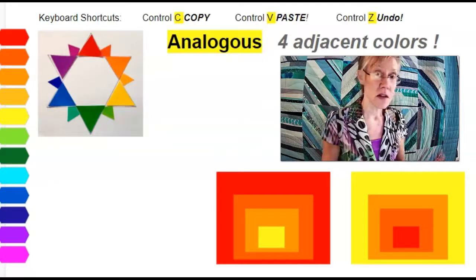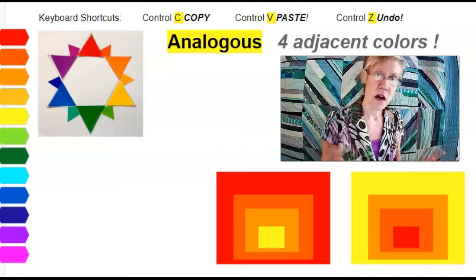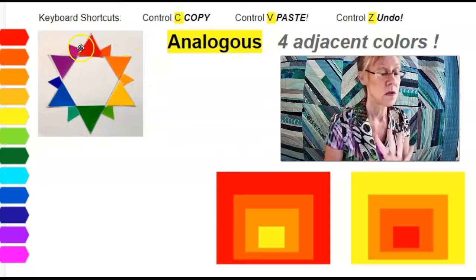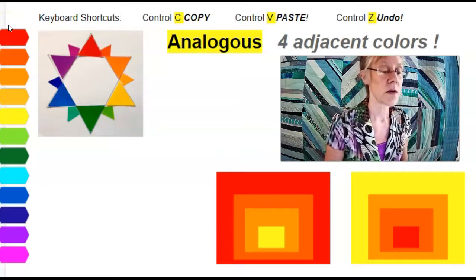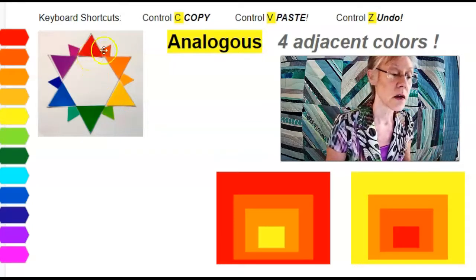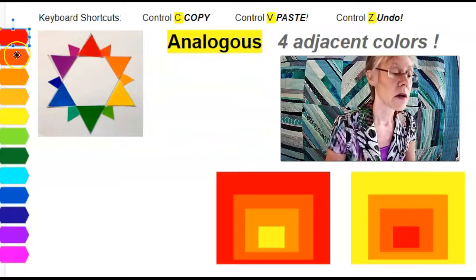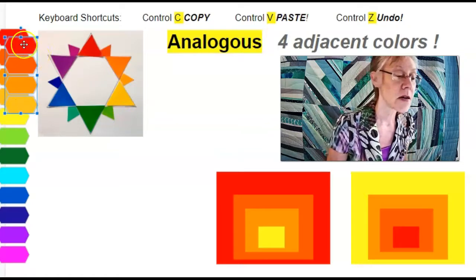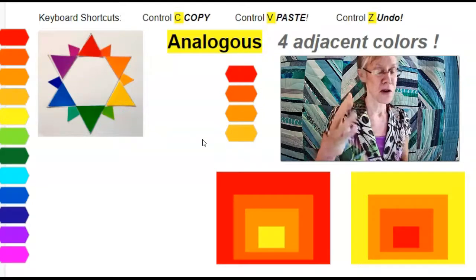Some students get a little confused about analogous colors. I guess because you have different choices. Here's a color wheel with the colors arranged in a circle. I put the same twelve colors in a line to help you. So if I chose red, red-orange, orange, and yellow-orange, that would be a primary, tertiary, secondary, and tertiary. All four colors right next to each other. That is an analogous set of four colors.